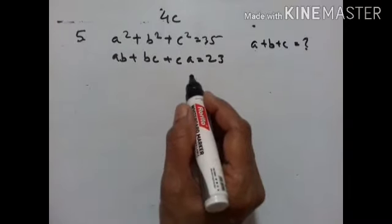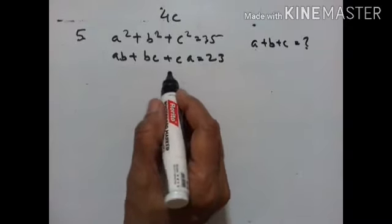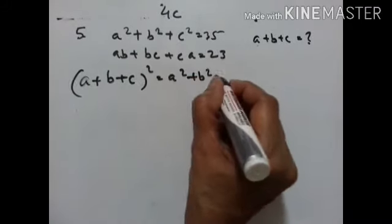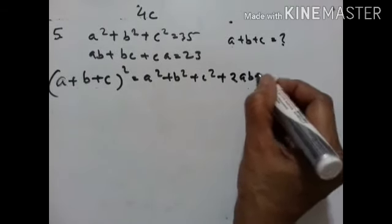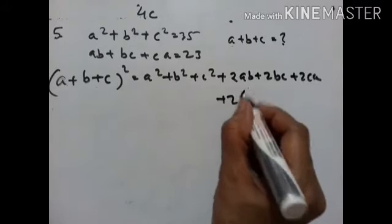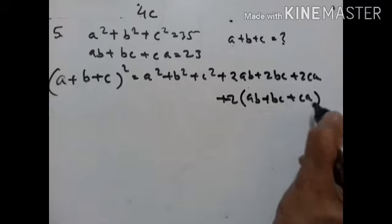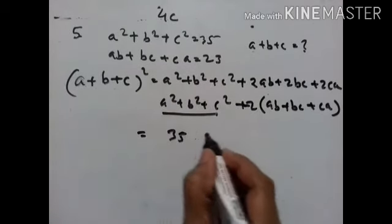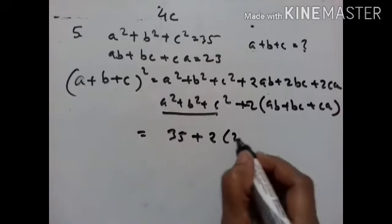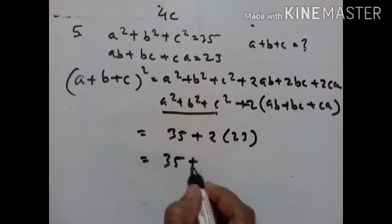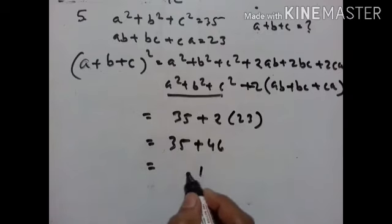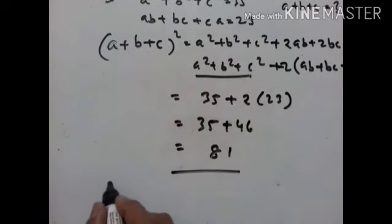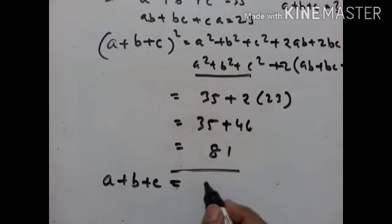Next: a square plus b square plus c square is given; we have to find a plus b plus c, where ab plus bc plus ca equals 23. Using (a plus b plus c)² equals a square plus b square plus c square plus 2 into ab plus bc plus ca. Here a square plus b square plus c square is 35, so we get 35 plus 2 into 23 equals 35 plus 46 equals 81. So a plus b plus c whole square equals 81. Taking square root on both sides, a plus b plus c equals plus or minus 9.